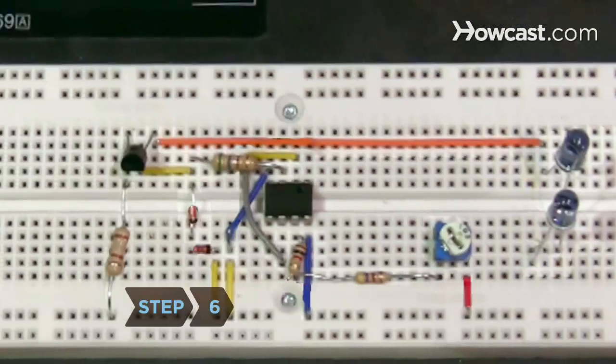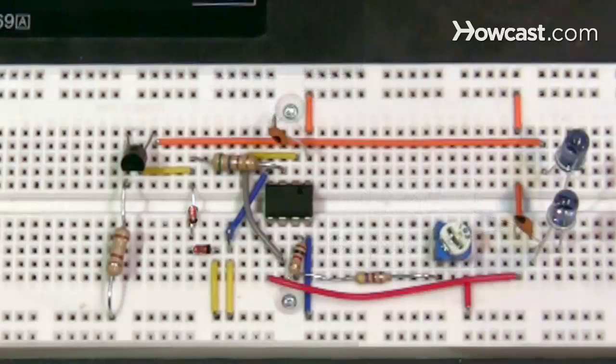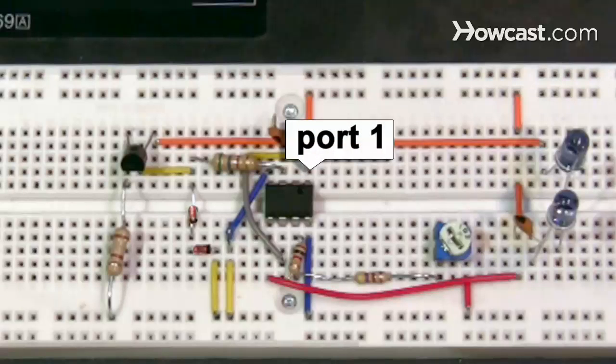Step 6: Connect the negative terminal of the second LED to the second 10 nanofarad capacitor in the row connected to the 9-volt battery's negative terminal. Connect the other side of the capacitor to port 5 of the timer. Connect the first capacitor to the row connected to the 9-volt's negative terminal and port 1.